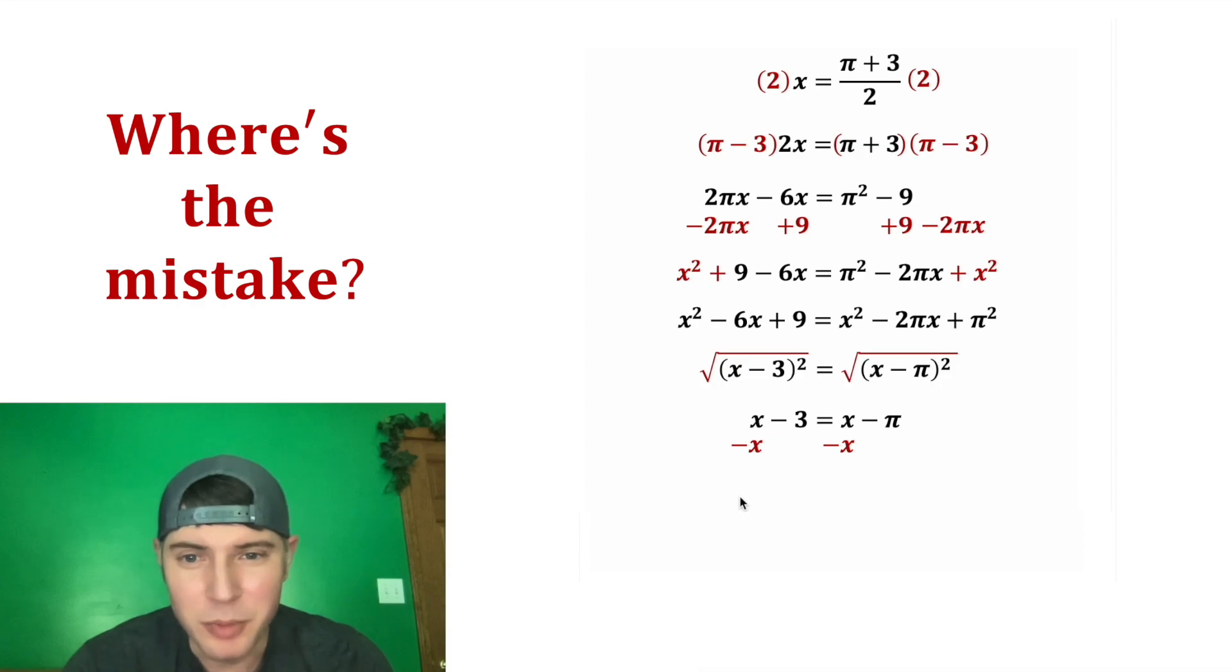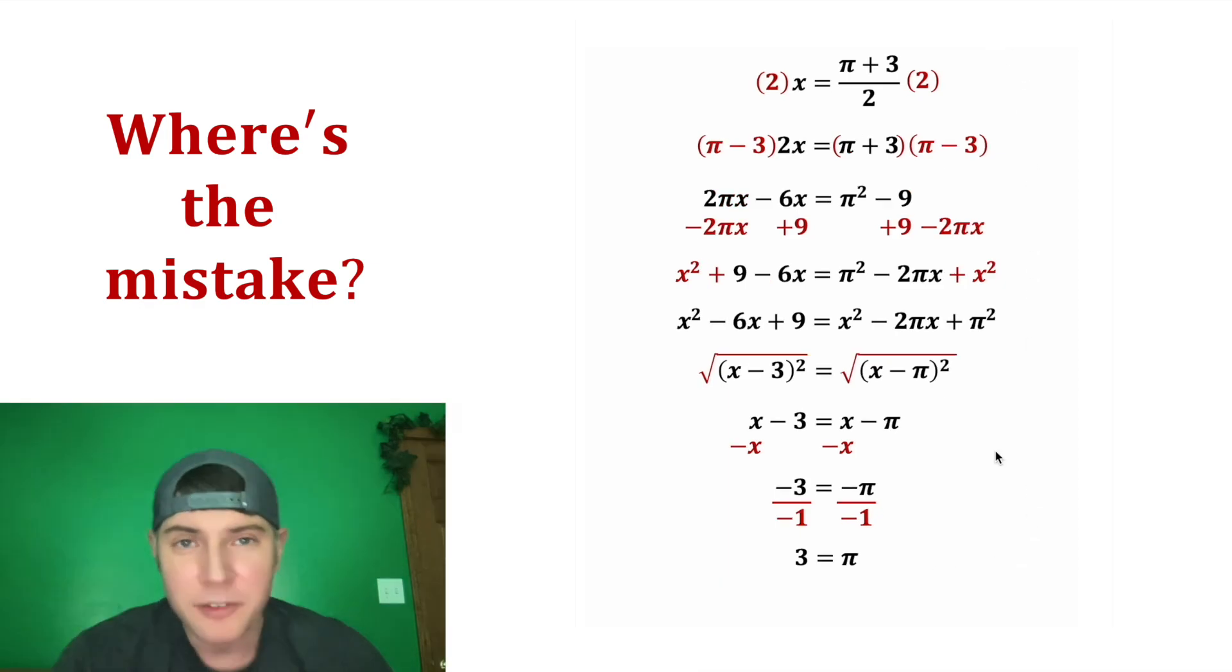Then from here we subtract x from both sides. On the left hand side we have negative 3 and on the right hand side we have negative pi. After we divide both sides by negative 1 we get 3 equals pi. And clearly this is not true, so where is the mistake? And if you want to try to find the mistake on your own, pause it because I'm going to show it in 3, 2, 1.